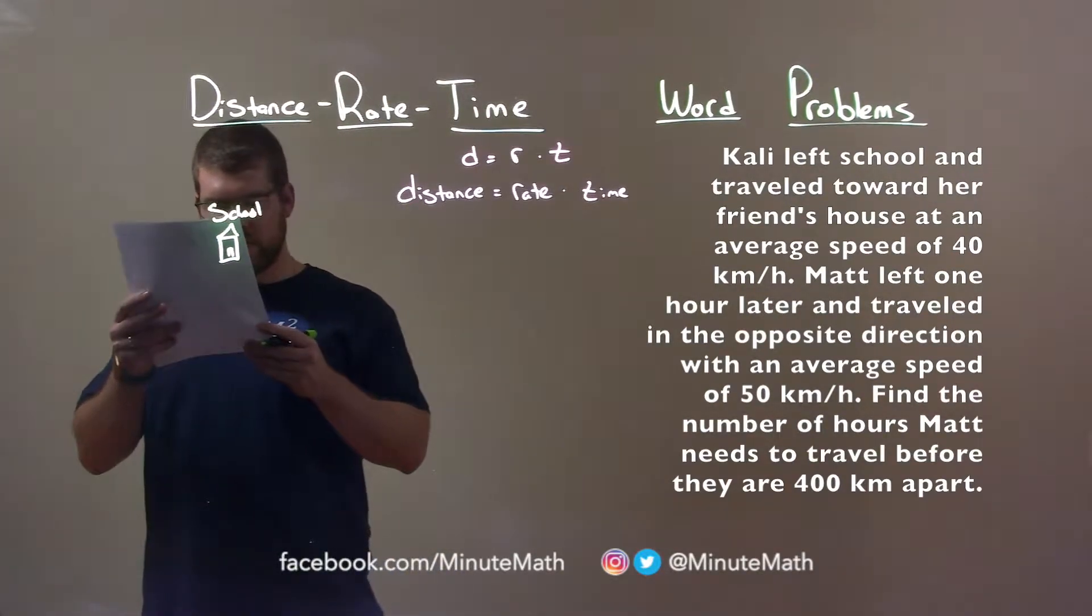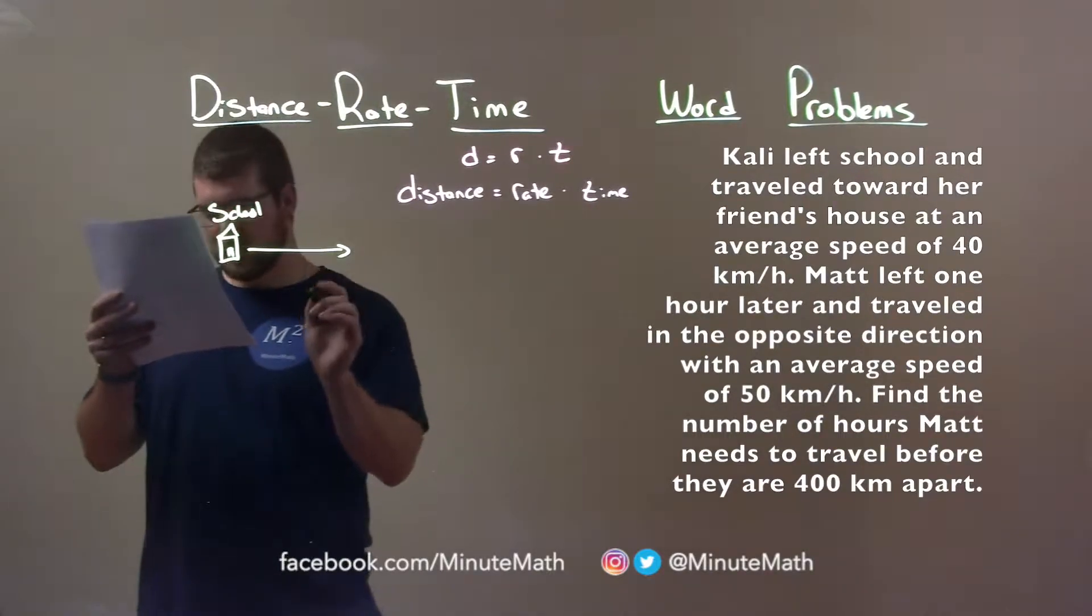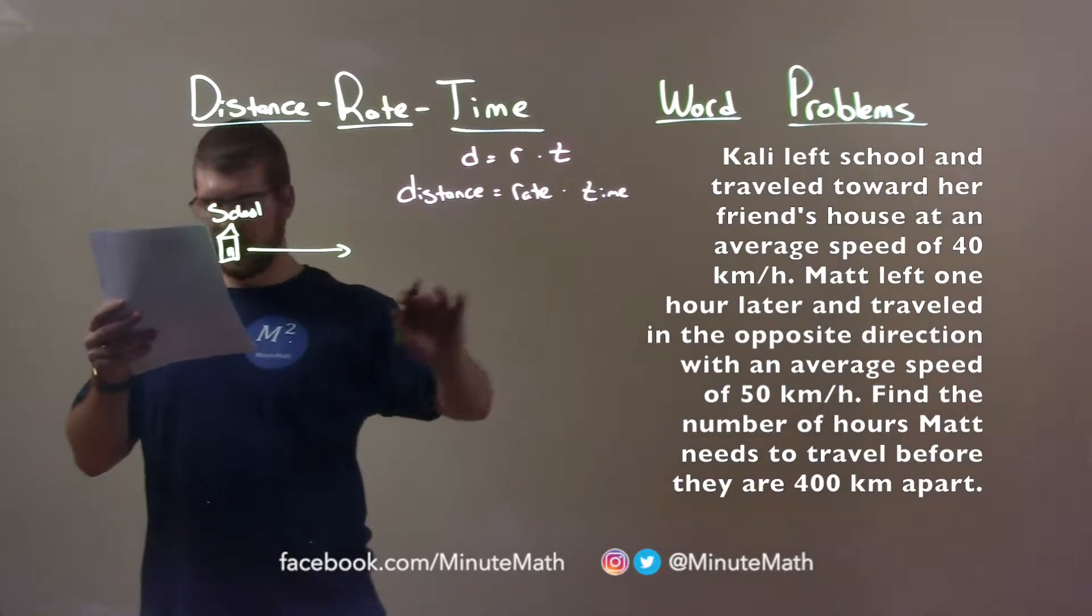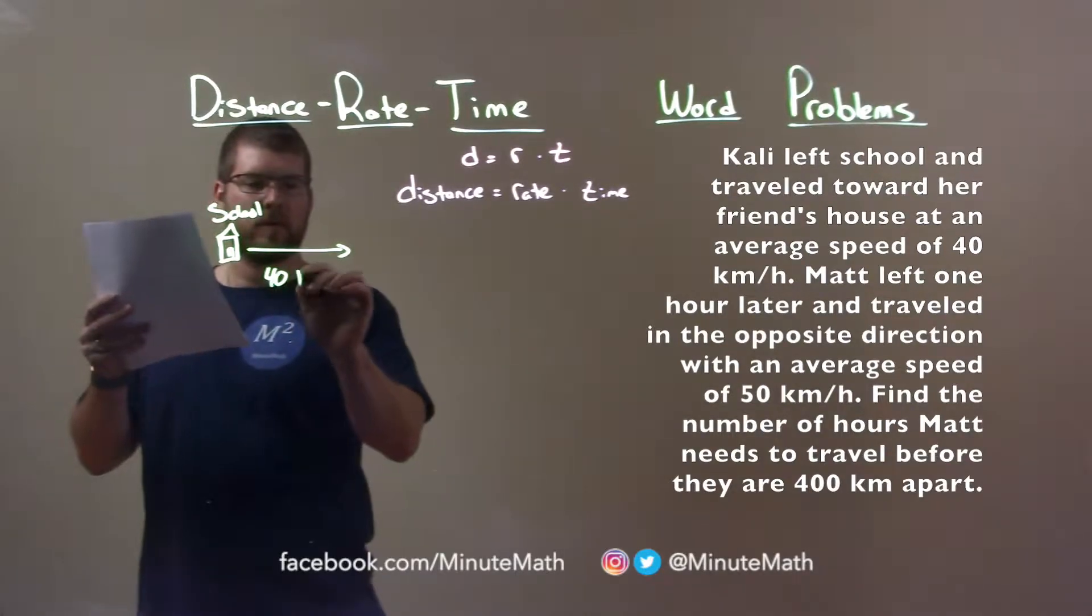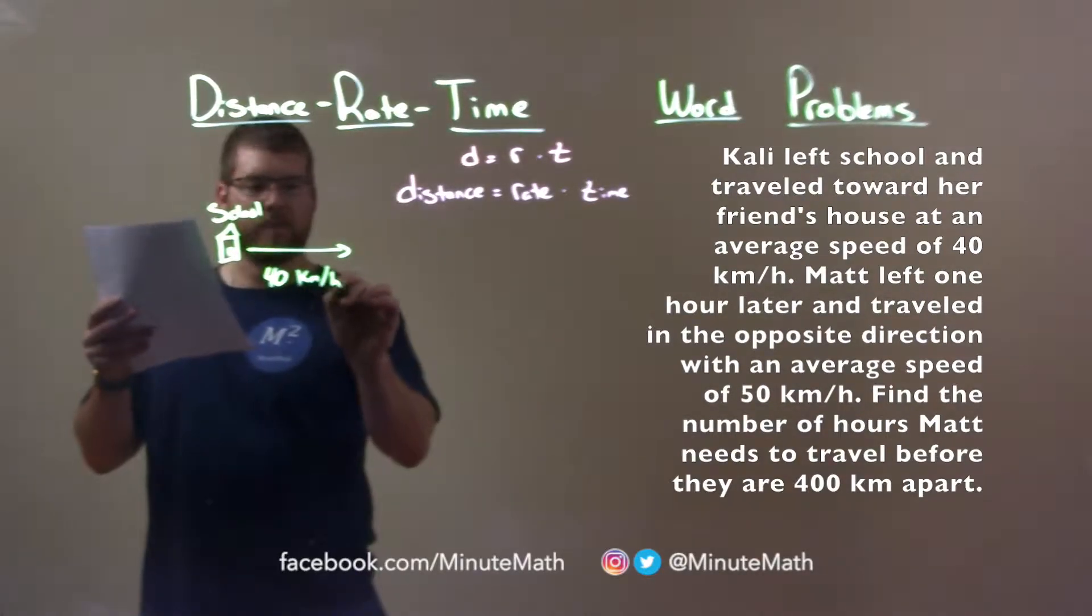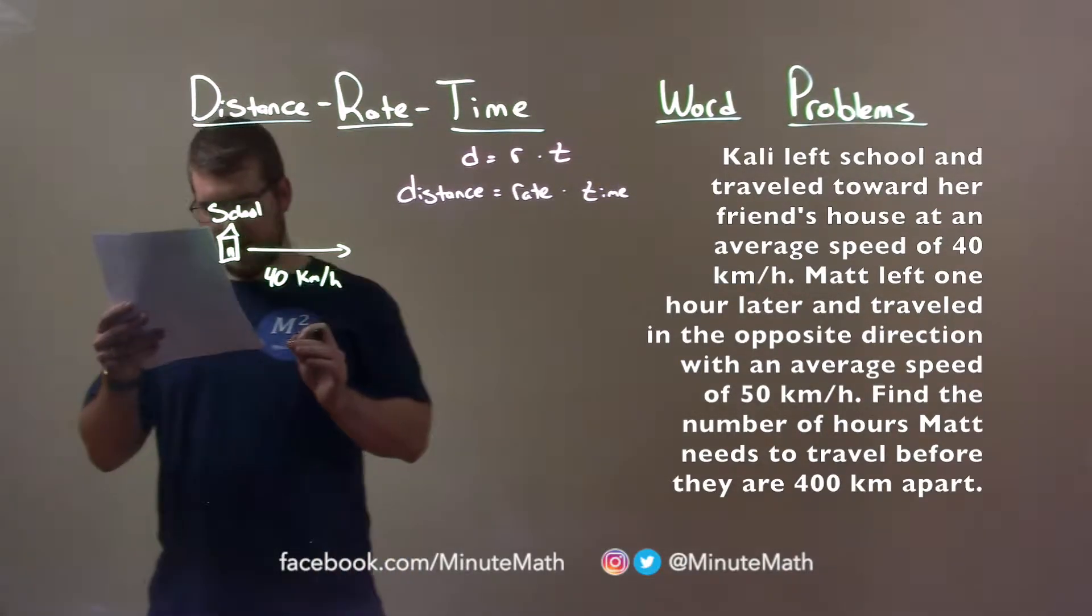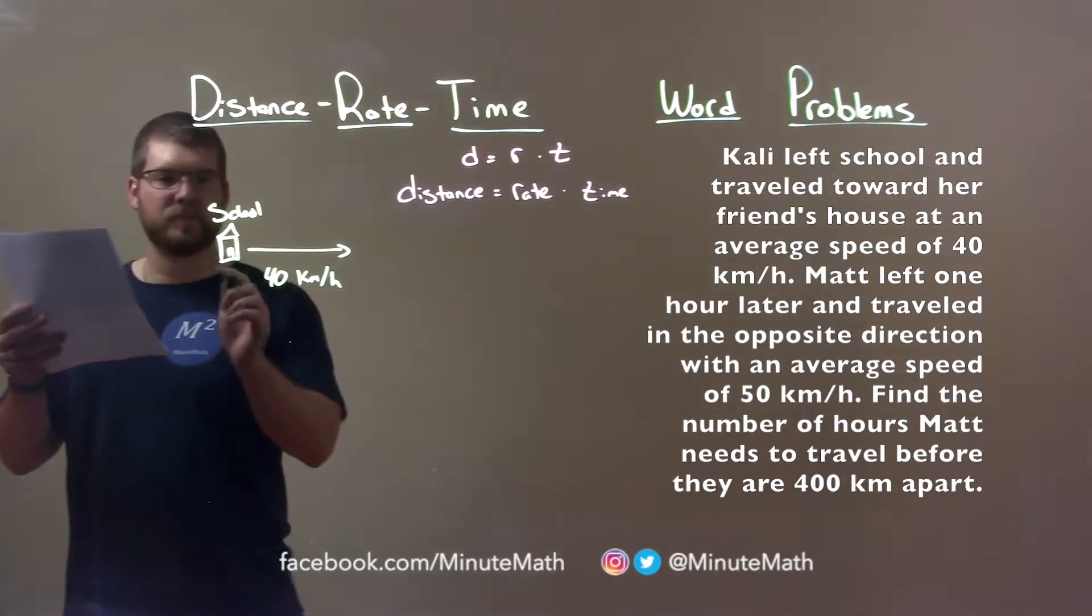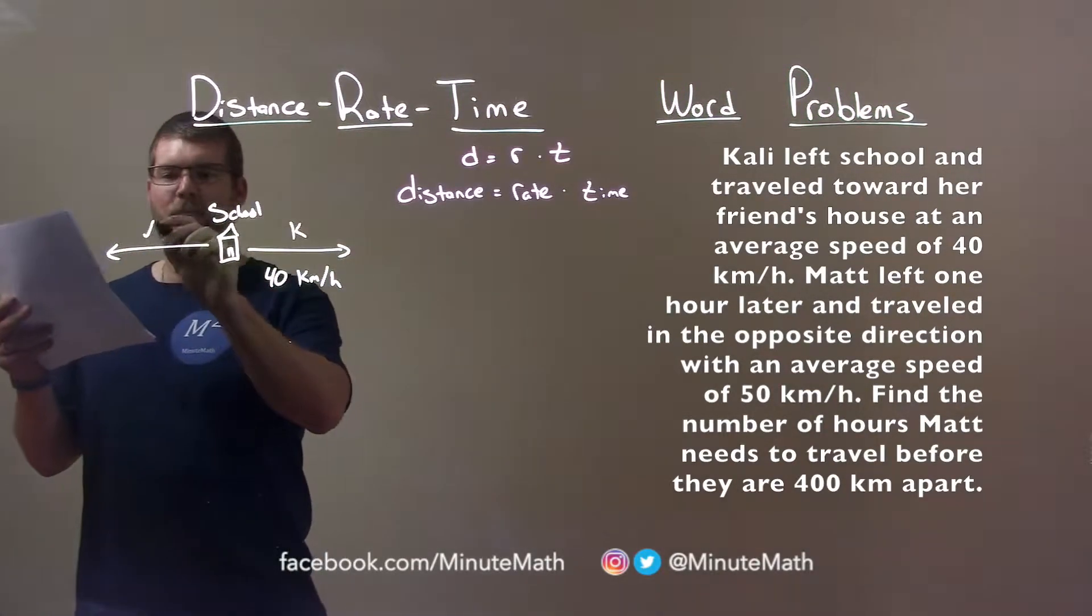They told Kali left school and traveled toward her friend's house. So she goes this direction and she's traveling. So her friend's house is somewhere over here. She's traveling 40 kilometers per hour. They also tell us that one hour later Matt left, okay, in the opposite direction from school. So Matt is going this way. So we have Kali and we have Matt.